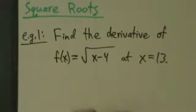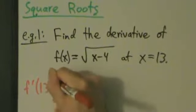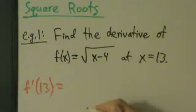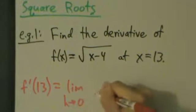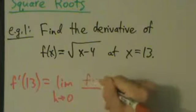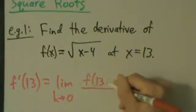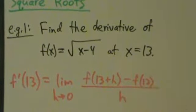So going back to our definition of the derivative, that's going to be f prime of 13 equals the limit as h goes to 0. So f of 13 plus h minus f of 13, all divided by h.